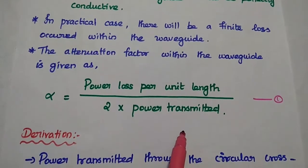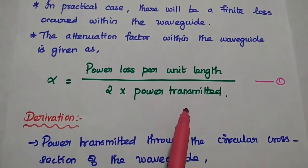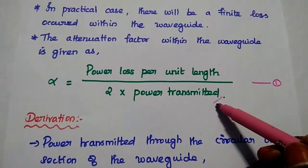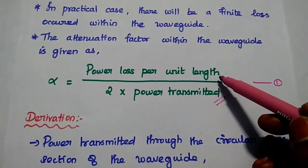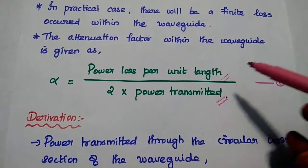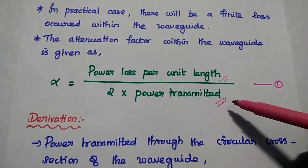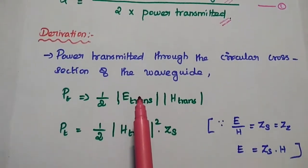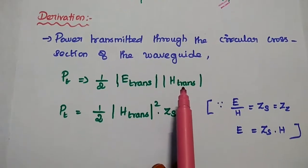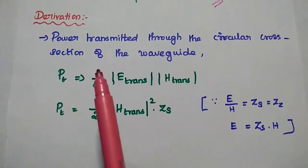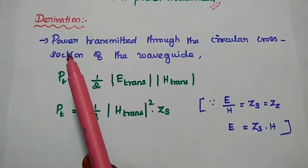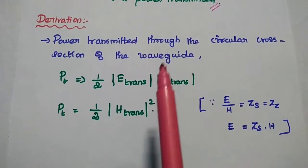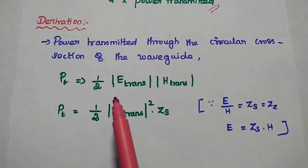We are going to find out the attenuation factor for TE waves and TEM waves. For that, first we are going to find out the total power transmitted and then the power loss. Then we have to substitute both values in the first equation to get the attenuation factor. Next, we are going to find out the total power transmitted through the circular cross section of the waveguide. For that, we are going to use the Poynting vector.